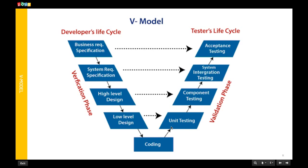Once unit testing is completed, we integrate everything and combine them as a whole component. Once all modules are ready and integrated, we do System Integration Testing. After that, the next stage is User Acceptance Testing. The dotted lines show the association between each phase of the developer lifecycle and the tester lifecycle — for example, unit testing is part of development, and the developer has to do the unit testing.